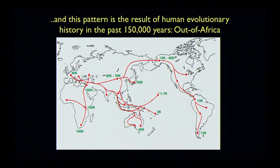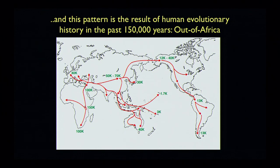This pattern geneticists have stared at over the last many decades. Lots of people, both in the room and outside, have contributed to these studies. And the bottom line that we've now known for at least 20 years or more is that the pattern I showed you before is the consequence of our shared history — the history of all humans.